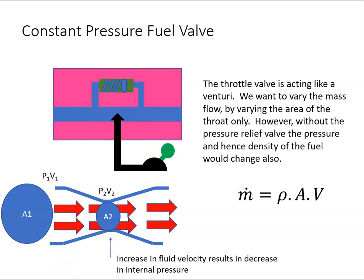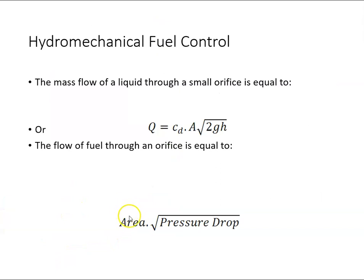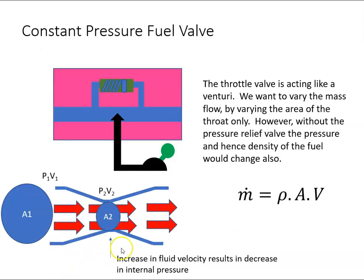If I keep the pressure drop constant, then the flow of fuel will only be dependent upon the area. That's the basic premise of how the hydromechanical fuel control works. We need to have this pressure relief valve across the throttle valve to meter the amount of fuel.